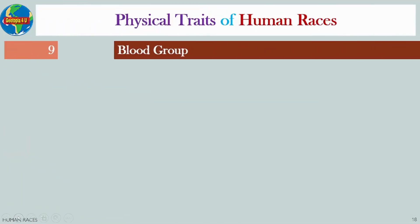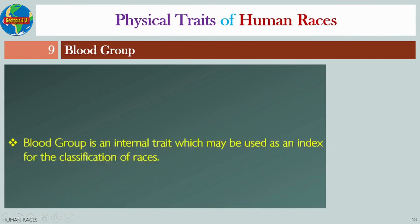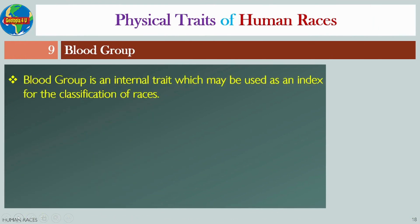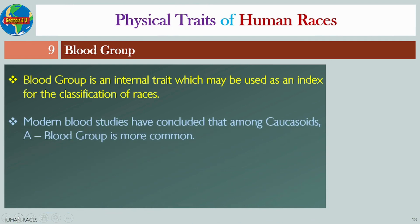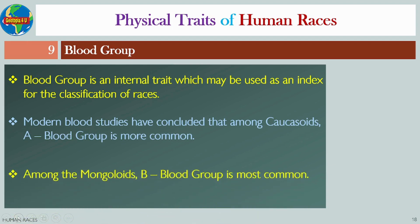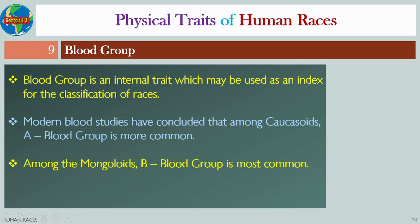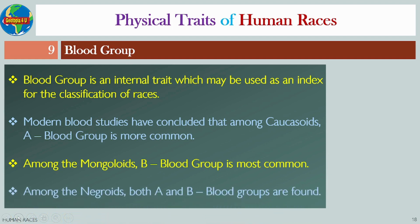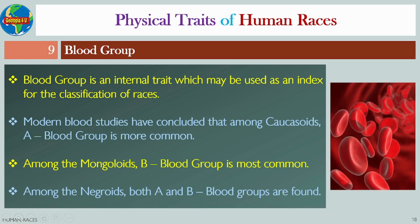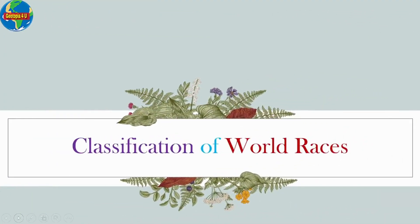The last physical trait is blood group. Blood group is an internal physical trait which may be used as an index for the classification of races. Modern blood studies have concluded that among Caucasoids, the A blood group is more common; among Mongoloids, the B blood group is most common; and among Negroids, both A and B blood groups are found. Next, we move on to the classification of world races.